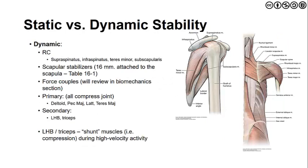The dynamic stabilizers are our rotator cuff — four muscles: supraspinatus, infraspinatus, teres minor, and subscapularis — as well as an additional 16 muscles through our scapular stabilizers, detailed in Dutton's table 16-1. Force couples will be reviewed shortly. Primary muscles in addition to the rotator cuff that help compress the joint are the deltoid (anterior, middle, and posterior fibers), pectoralis major, latissimus dorsi, and teres major. Secondary muscles include the long head of the biceps, which has an intraarticular attachment on the labrum, and the triceps — both act as shunt muscles providing compression during high-velocity movements.